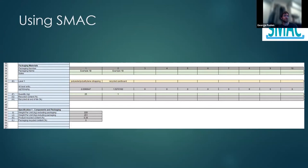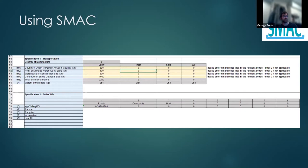You do the same for the packaging materials that the shelter components come in, then enter information on the transportation of the different materials. That's broken down into different stages: from the country of origin to the point of arrival in-country, from the point of arrival to the warehouse or storage point, and from there to the construction site and eventually to disposal. You can choose different methods of transport, which will affect the eventual output. The end-of-life calculations are done automatically based on the information you put in above — you don't need to worry about those.